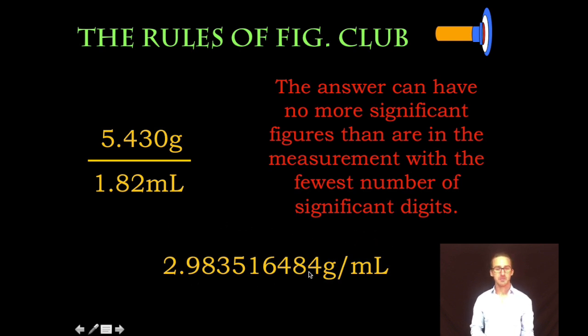No way I can be this precise out to like the billionths place when my mass measurement and my volume measurement aren't nearly that precise. Here though, I look at total number of significant figures. My mass measurement has four total sig figs. My volume measurement has three.